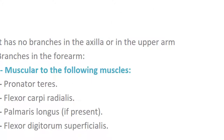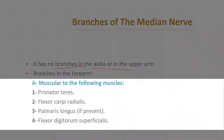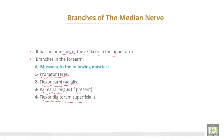The median nerve has no branches in the axilla or in the upper arm. Branches in the forearm are muscular, supplying: number one, pronator teres; number two, flexor carpi radialis; number three, palmaris longus, which may be absent; and number four, flexor digitorum superficialis.